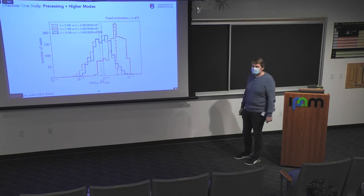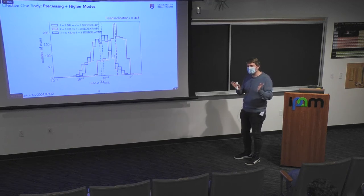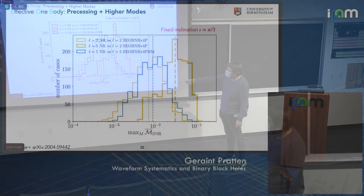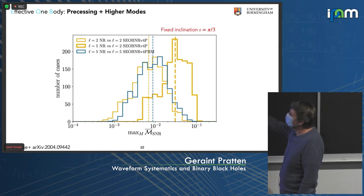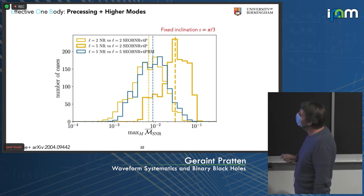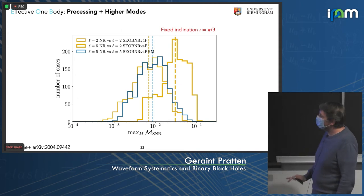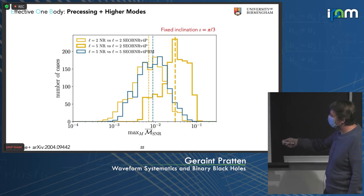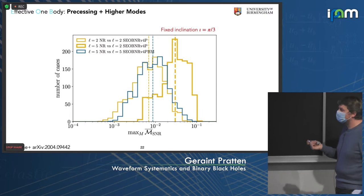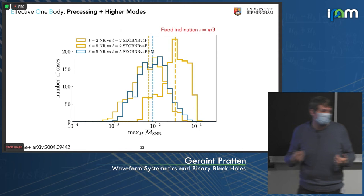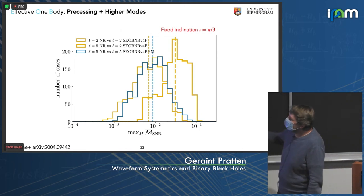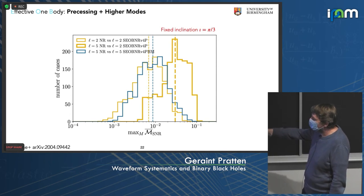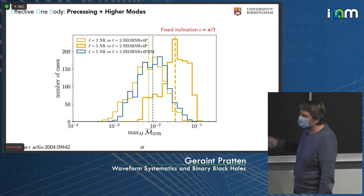Looking at mismatches for precession and higher modes at fixed inclination of pi/3 — not quite face-on, not quite edge-on. The thin orange curve is just the dominant harmonic from NR against the dominant harmonic from SEOBNRV4P, and mismatches are around a few times 10^-3, bordering on 10^-2. But if you include all multipoles in NR while only modeling the dominant harmonic, the mismatches suddenly degrade to around 10^-2, pushing up against 10^-1 quite sharply — showing that if we miss modeling the higher multipoles, we dramatically impact mismatches. Once we include all multipoles (SEOBNRV4PHM), mismatches drop back down to a few times 10^-3 to 10^-2.